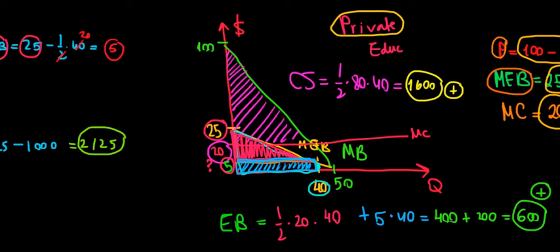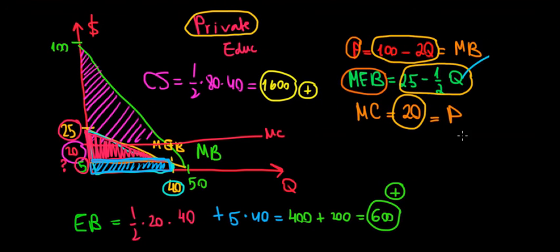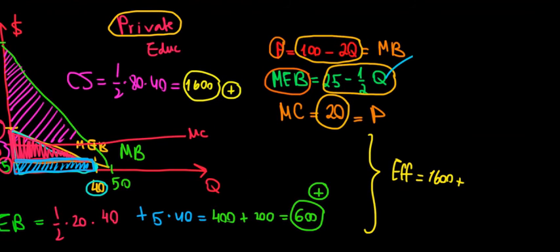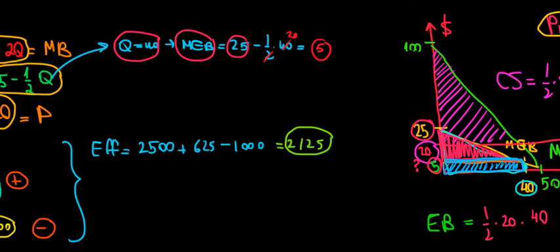There's no producer surplus since price equals marginal cost, and there's no subsidy cost. So the overall efficiency is the sum of 1600 from consumer surplus plus 600 from the externalities, which equals 2200. This is the efficiency under private education. The efficiency under free education from the previous video is 2125, which is $75 less efficient.